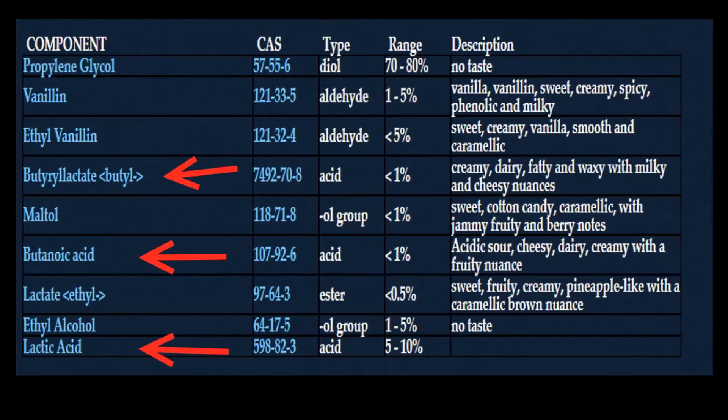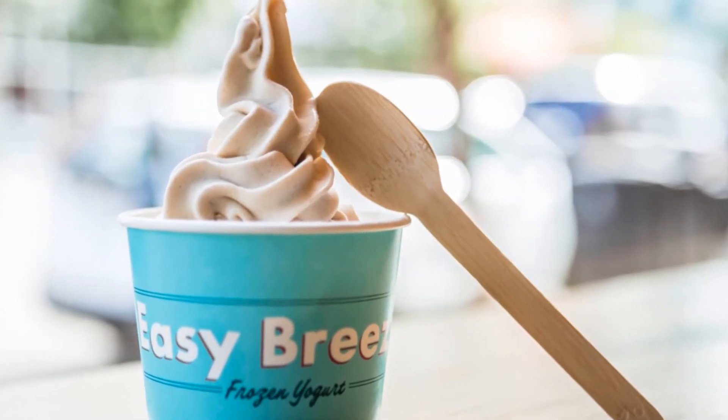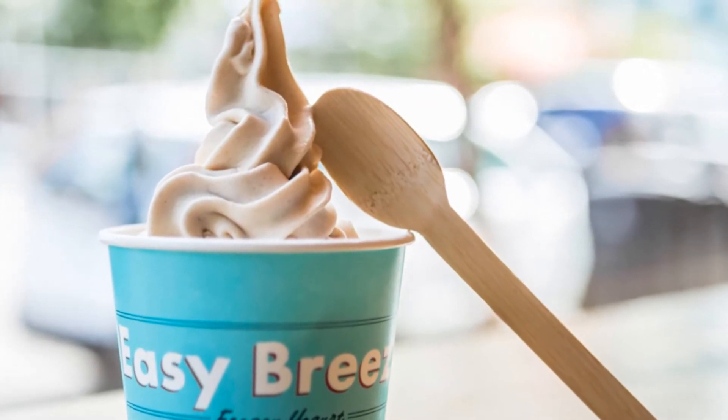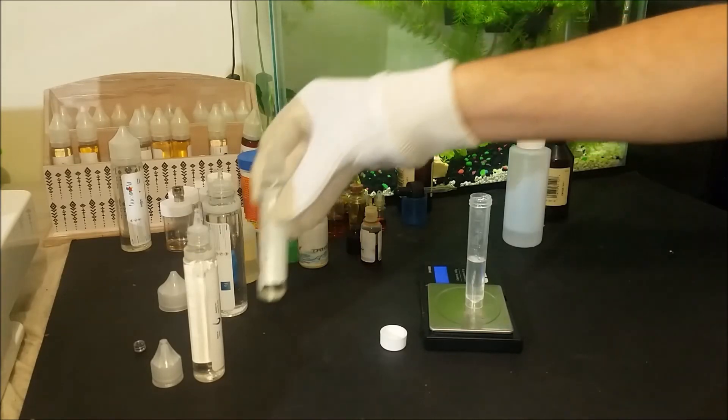Next there is about 1% of butyreal lactate, which creates the milky undertones. Then there is butanoic acid, which creates the tang and sourness. And last there is a lot of lactic acid, which is the aroma responsible for the cheesy or expired milk smell. Now a little bit of lactic acid usually helps brighten up creams and make them taste more real, but at 10% used here, I can see why some people can only smell expired cheese and not any of the other aromas included.